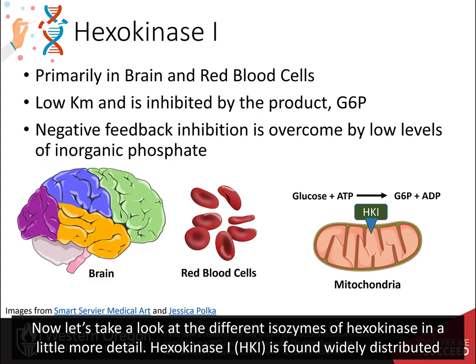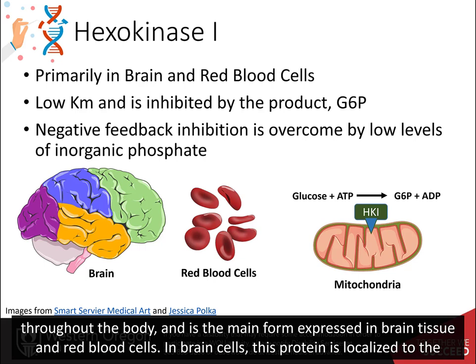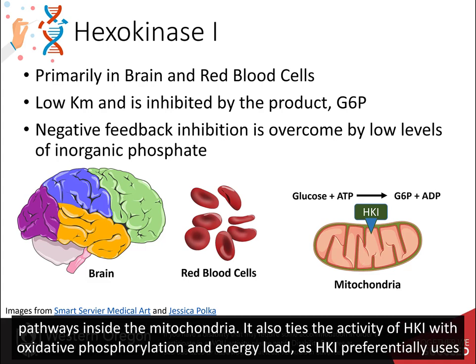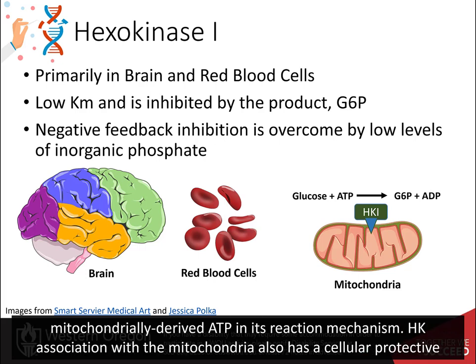Now let's take a look at the different isozymes of hexokinase in more detail. Hexokinase 1, or HK1, is found widely distributed throughout the body and is the main form expressed in brain tissue and red blood cells. In brain cells, this protein is localized to the mitochondria. This colocalization aids in the efficient coupling of glycolysis with the Krebs cycle and oxidative phosphorylation pathways inside the mitochondria. It also ties the activity of HK1 with oxidative phosphorylation and energy load, as HK1 preferentially uses mitochondrially derived ATP in its reaction mechanism.